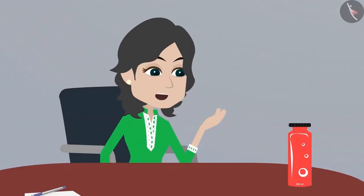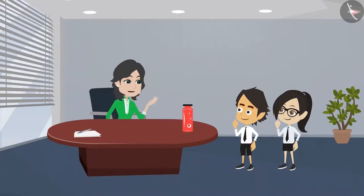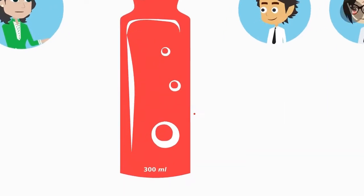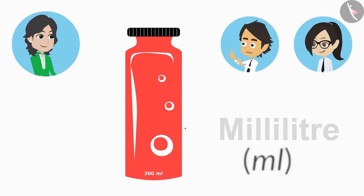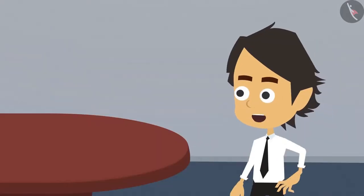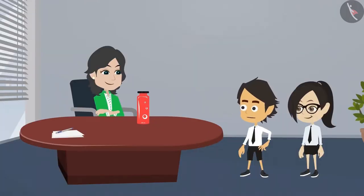This buttermilk is a liquid. Liquid is measured in liter or milliliter. It must be written somewhere on this bottle — how many milliliters of buttermilk does it contain? Here it says that this bottle has 300 milliliters of buttermilk. We use ml to write milliliter. Half of the 300 ml will be 150 ml, which means if we divide the buttermilk into two equal halves, we both will get 150 ml each.